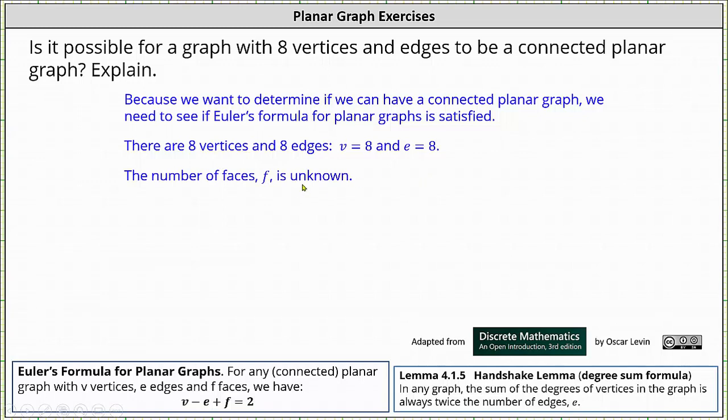But we can determine f by using Euler's formula. Performing substitution into Euler's formula, we have eight minus eight plus f equals two, indicating if f equals two, this formula is satisfied.